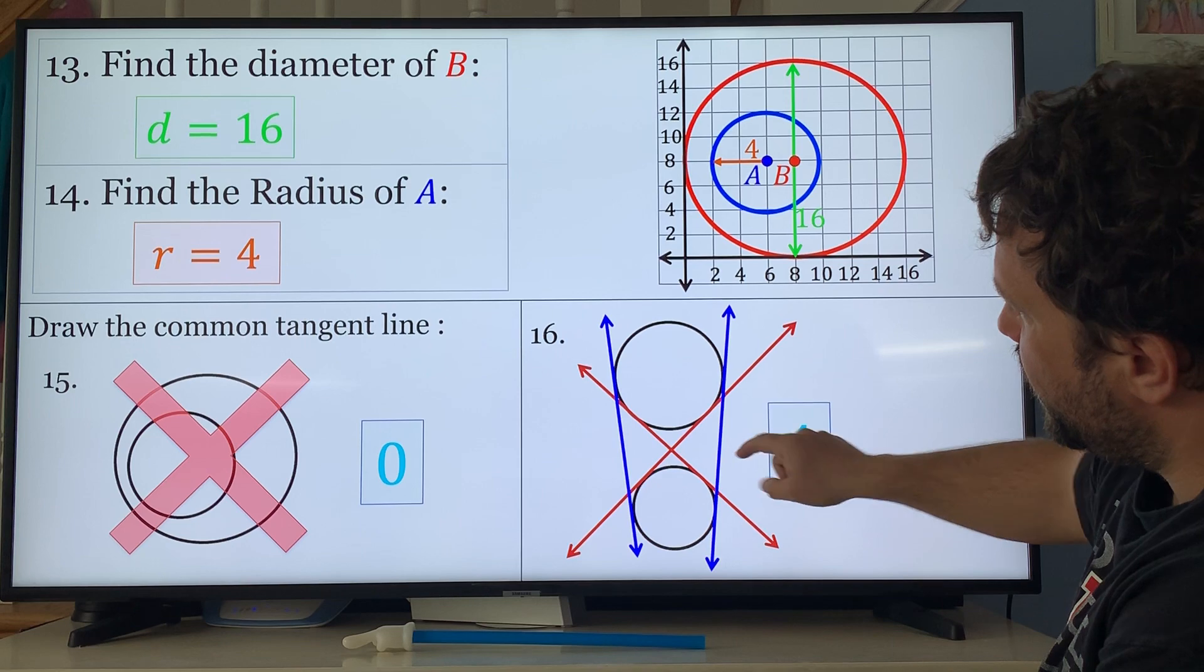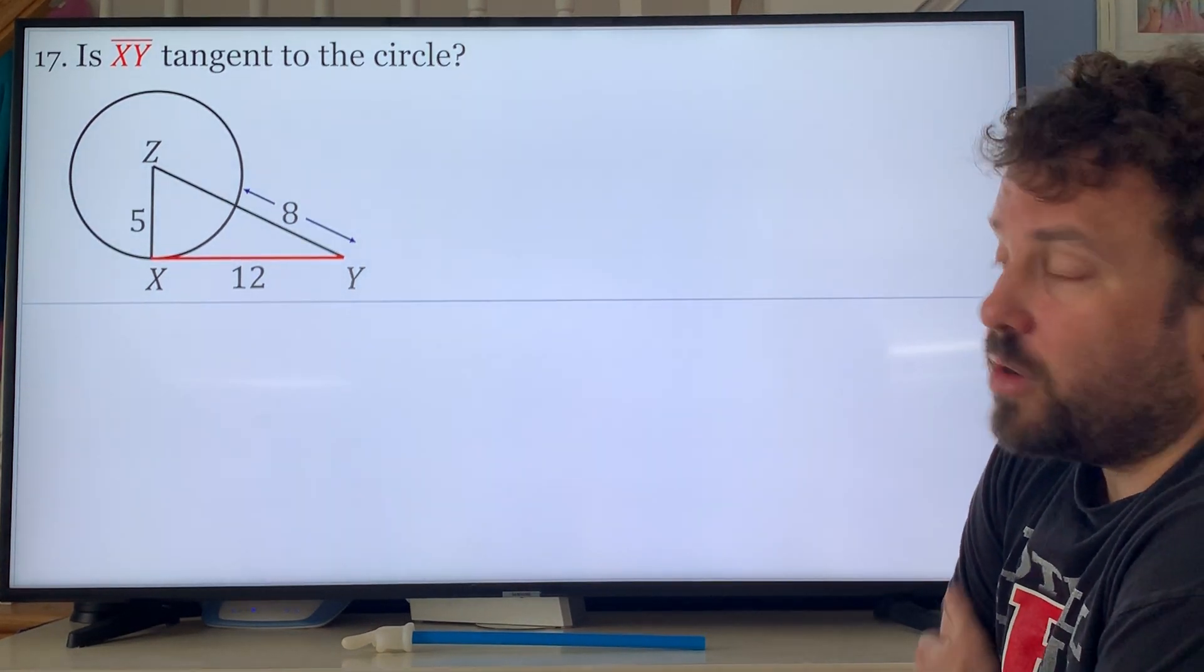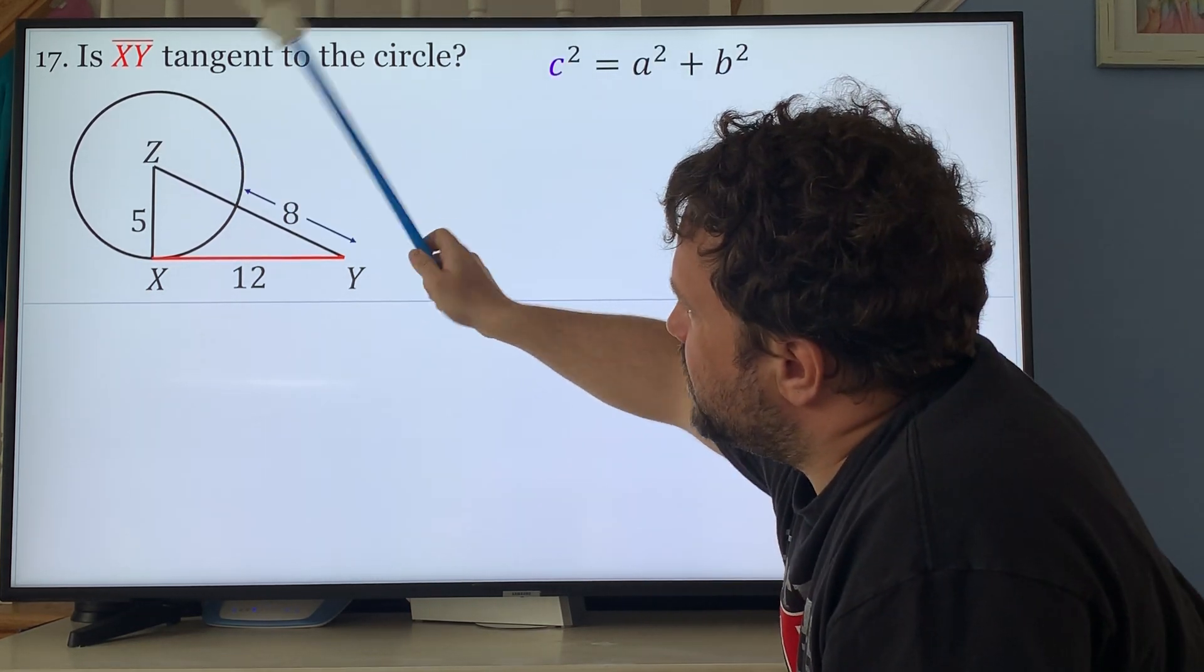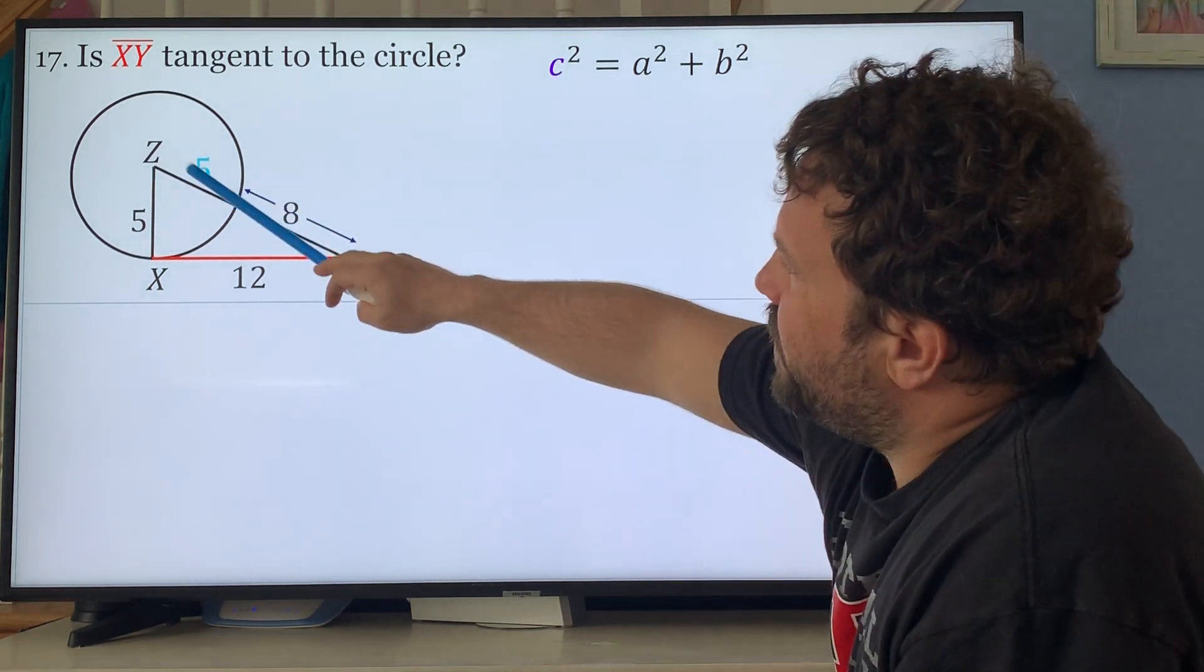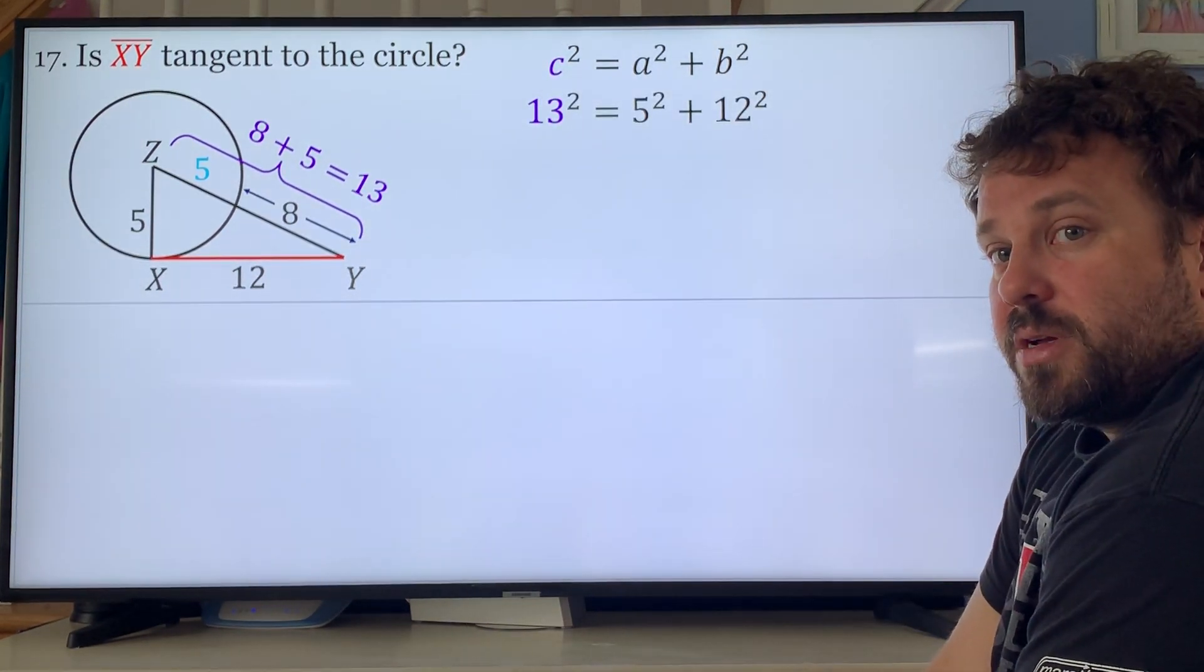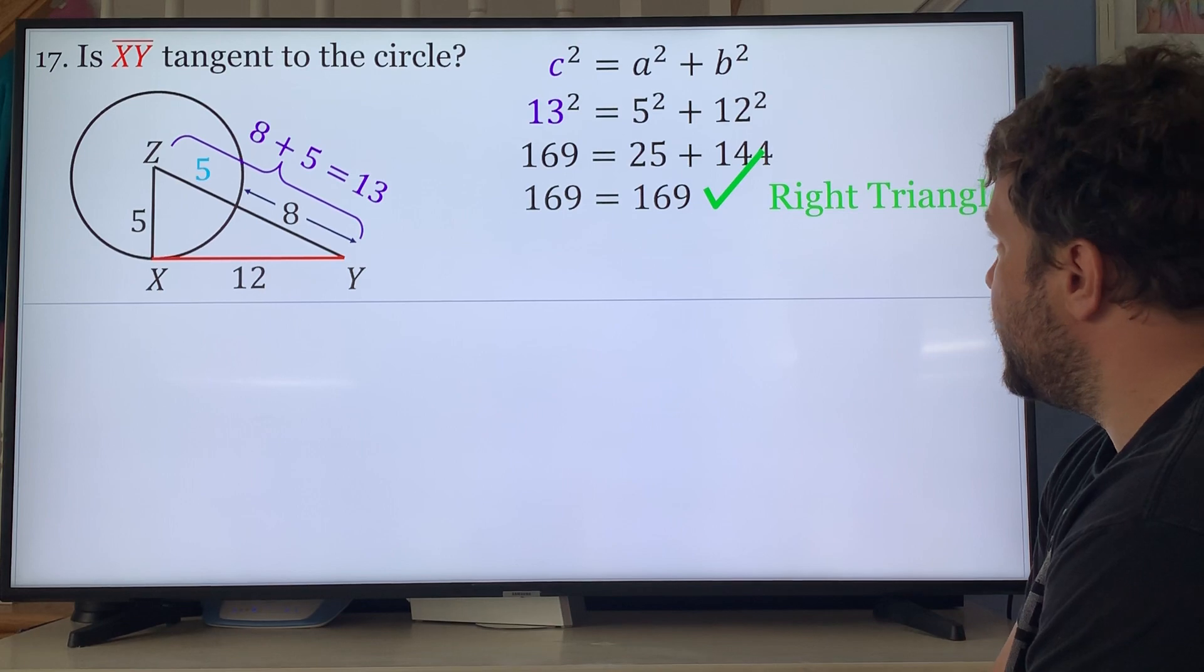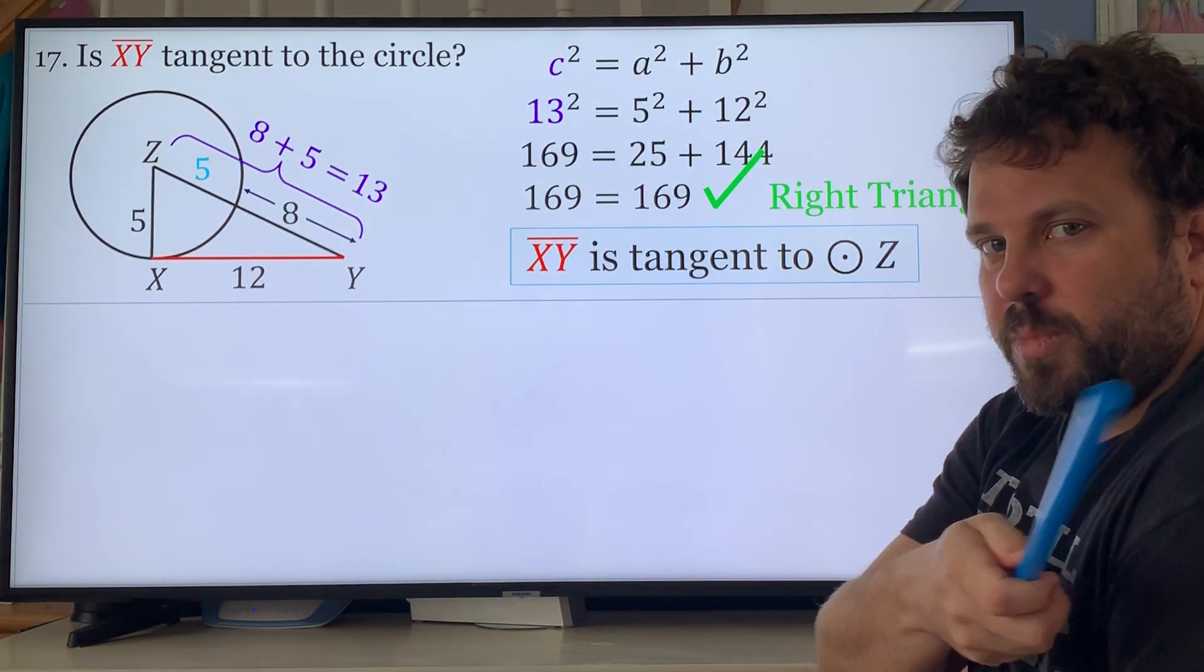Is XY tangent to the circle? Remember how to do this: in order to be tangent it has to be perpendicular to the radius. Since this is 8, this piece here is 5. You need c squared, your hypotenuse which is this, to equal a squared and b squared. So 5 squared plus 12 squared equals 13 squared. Remember your hypotenuse is always your longest side. Is 13 squared equal to 5 squared plus 12 squared? Of course it is. If you know your Pythagorean triples you could do that in your head. Otherwise you could do 169 = 25 + 144, 169 equals itself and it is a right triangle, which means it is tangent.